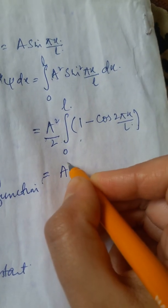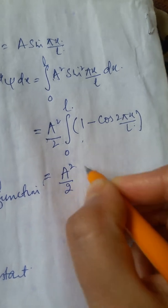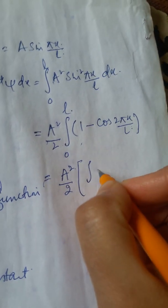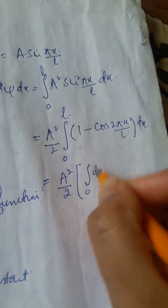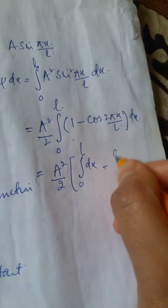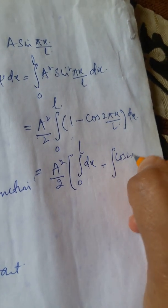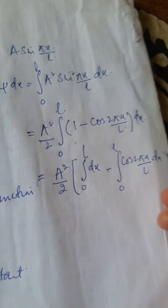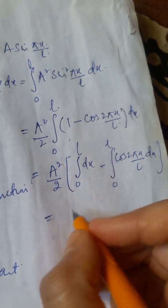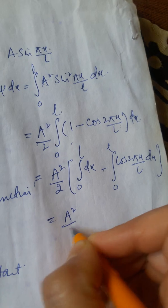So, this is A²/2. Here it is ∫dx from 0 to L minus ∫cos(2πx/L) dx from 0 to L.